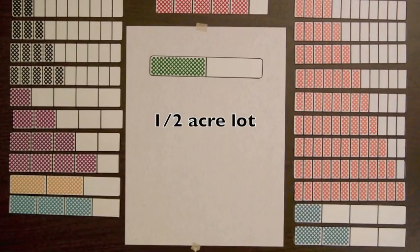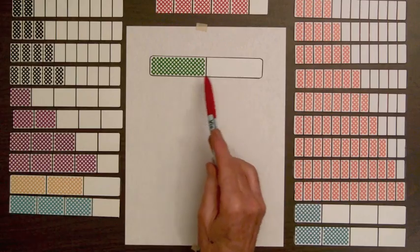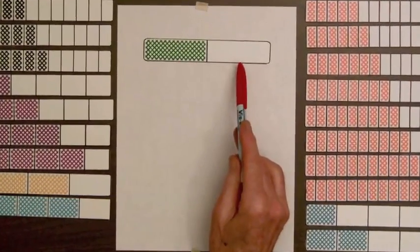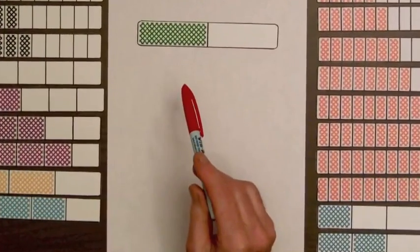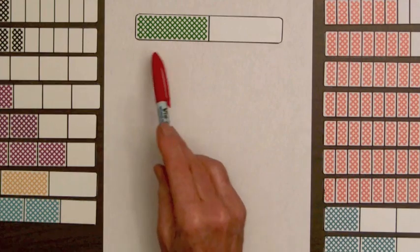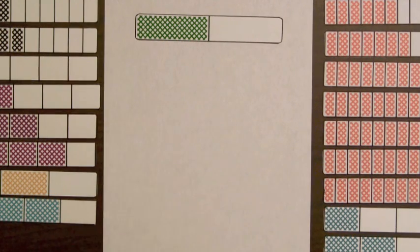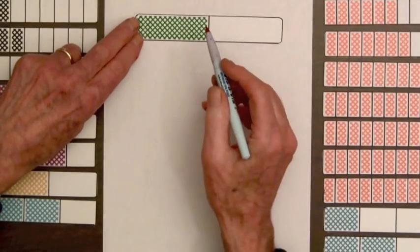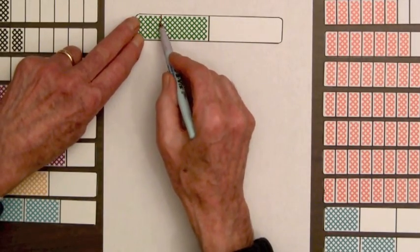Suppose a second family has a one-half acre lot, represented by this bar that has one part out of two shaded, and they are thinking about planting a garden on one-third of this lot. Their garden will be what fraction of an acre? So again, we take our water-based pen, and this time we divide this into three equal parts, roughly.